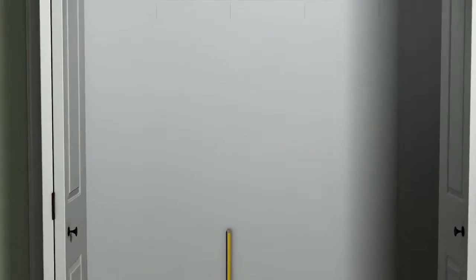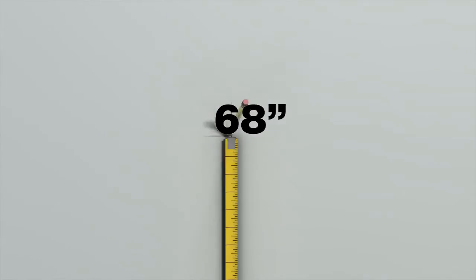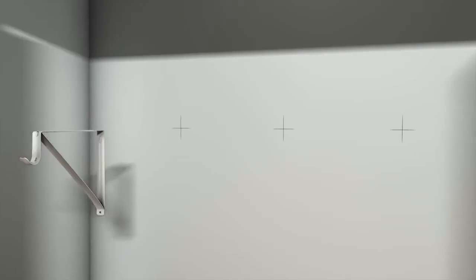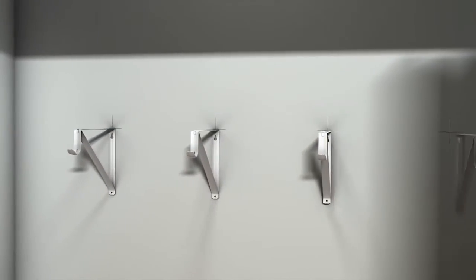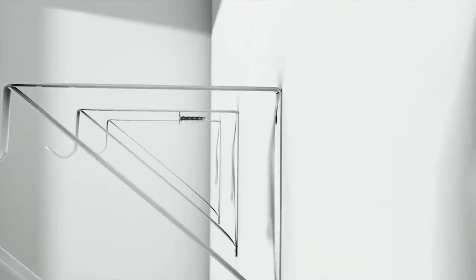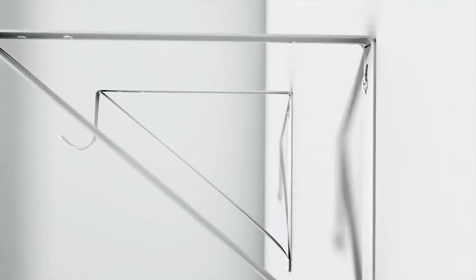Measure 68 inches from the floor and draw a line at each stud mark. Align the brackets with the studs at 68 inches and secure through the wall board into studs using two screws per bracket.